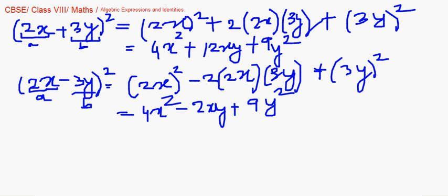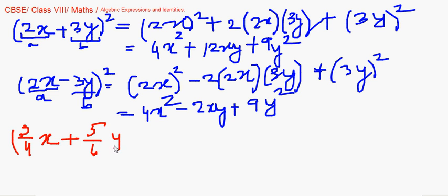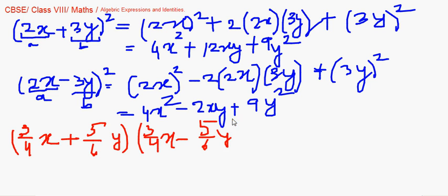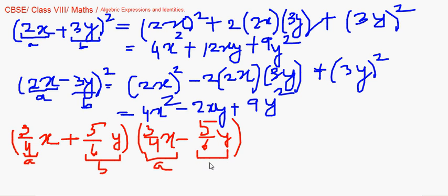Now we move on to apply the third identity. You might come across a question which says: find the product of (3/4 x + 5/6 y) multiplied by (3/4 x − 5/6 y). Here you don't need to expand it the long way. You can see that if 3/4 x is assumed as a and 5/6 y as b, this gives you the identity (a − b)(a + b).